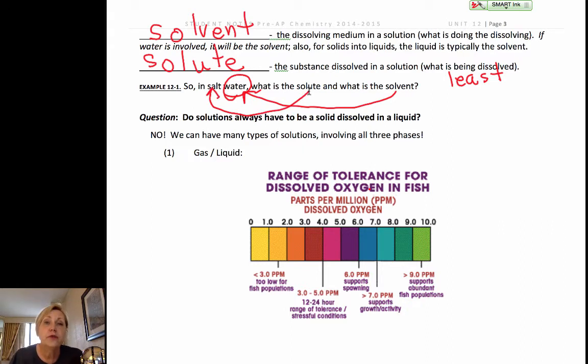Now, there's a whole variety, not just solids and liquids. There's a whole variety of solutions that you can have. We can have a gas dissolved in a liquid. For example, in a fish tank, we have oxygen dissolved in some sort of an aqueous or water-based solvent. So, we would call these aqueous solutions.